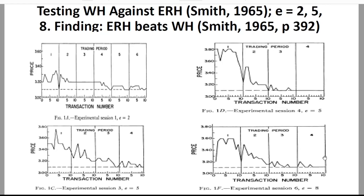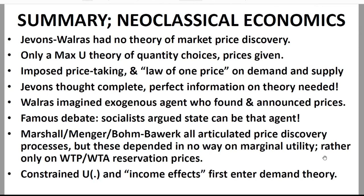Here's a summary of Neoclassical economics: Jevons, Walras, and Edgeworth had no theory of market price discovery. They had only this maximum utility theory of quality choices given prices. They imposed the law of one price — that meant they imposed price-taking behavior and the law of one price on what individuals would discover in markets. They had no discovery by people in the market. What was Jevons's idea about how you might actually get those equilibrium prices? He said you had to have complete, perfect information — that was the only way on his model. That tells you nothing about what the people do in the market.